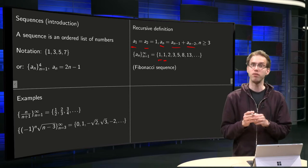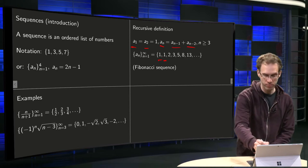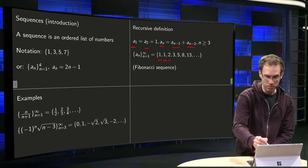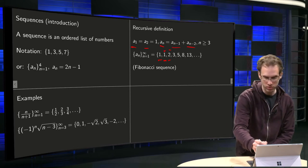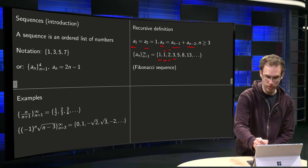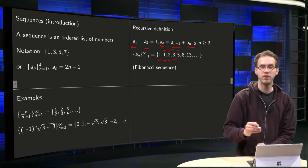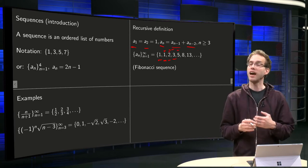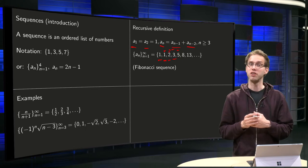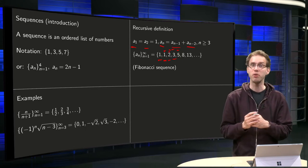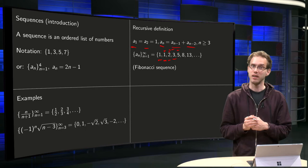And the next element is the sum of those, 1 plus 1 equals 2, and then the next element is the sum of 1 plus 2 equals 3, and then we go on with 2 plus 3 equals 5, etc. And you may know the sequence because it's a Fibonacci sequence, so that's another way to define a sequence.